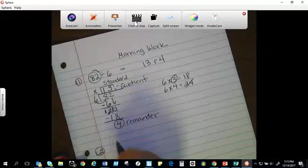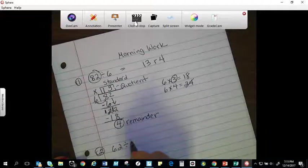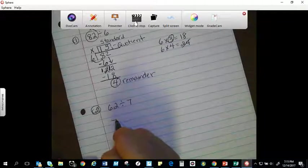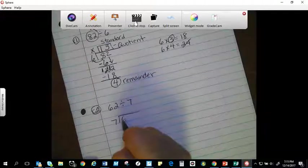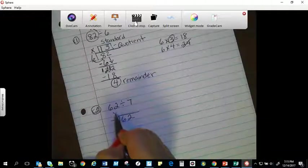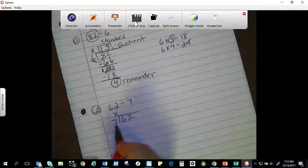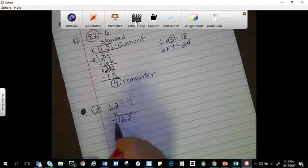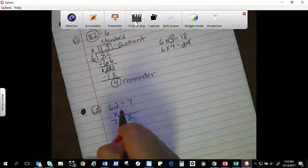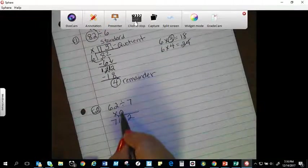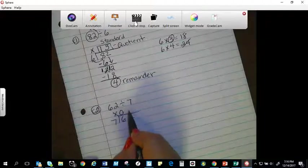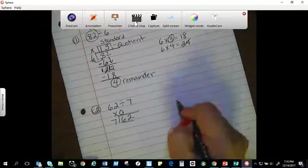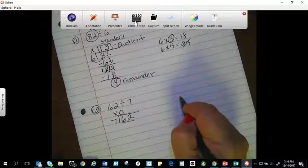Second problem, 62 divided by 7. Again, my standard division. I'm going to put my multiplication sign up here. Seven is larger than my six in my dividend, so I need to move over. How many groups of seven can go into six? None, because it's too big. I put that zero right on top so I know I need to move to the next place value. Now, how many groups of seven go into 62?